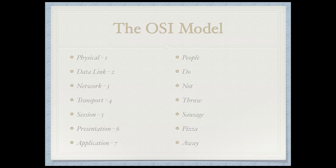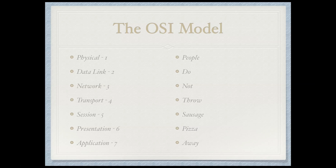So again, we have 'all people seem to need data processing,' which starts at layer 7 and works its way down to layer 1 — application through physical. And then we have 'people do not throw sausage pizza away,' which is physical through application, layer 1 through layer 7.